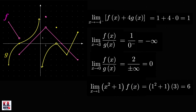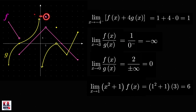Notice that the limit of f(x) as x approaches 1 is not the same as the function value at 1. If we look at the function value at 1, we have this solid dot, so the function value at 1 is equal to 5, while the limit is equal to 3. This tells us that finding a limit is not always about finding function values.